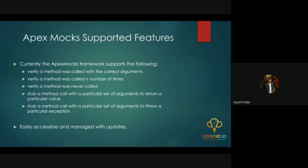The fflib Apex Mocks framework supports many additional features: verification that a method is called with correct arguments, verification that a method is called a specific number of times using verify dot times, and verification that particular argument values are used. Additionally, if you want a custom exception thrown — whether a new or handled exception — you can configure the mocking to return the desired exception. The framework is always accessible and regularly updated with commits to the branch.